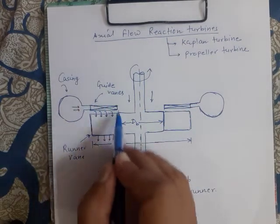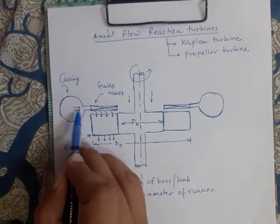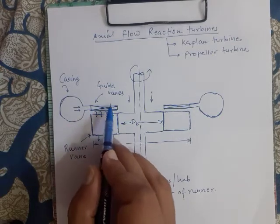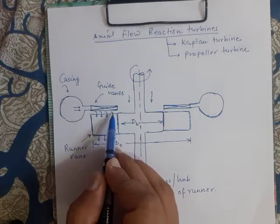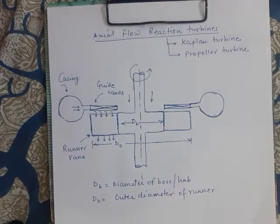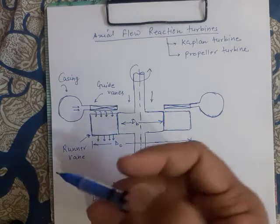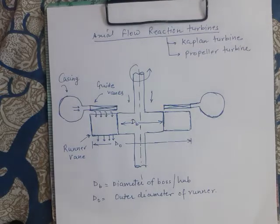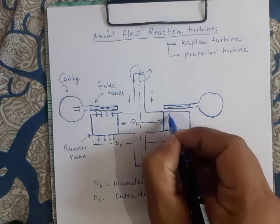To summarize: water comes from the casing, enters the guide vanes, which are designed to deflect the water so it enters the runner vanes axially. Entry is axial and exit is axial — this is why it is called an axial flow reaction turbine. The water works on the runner vanes in the axial direction.